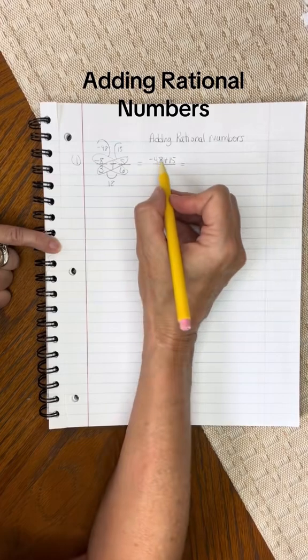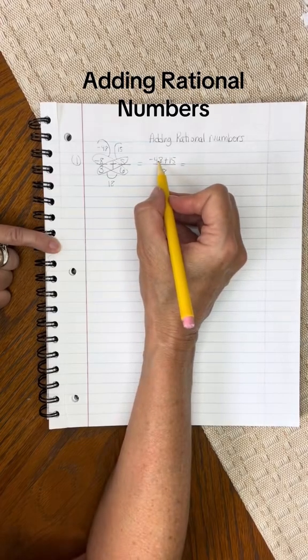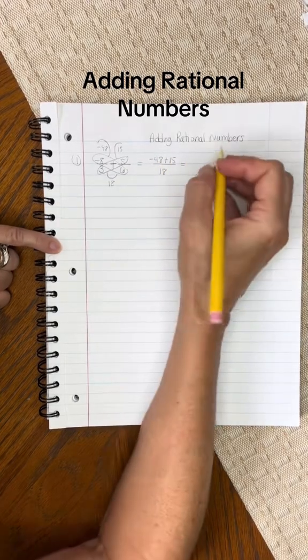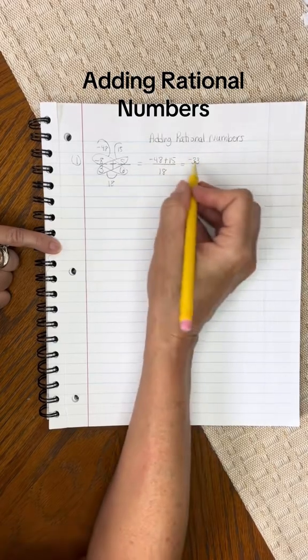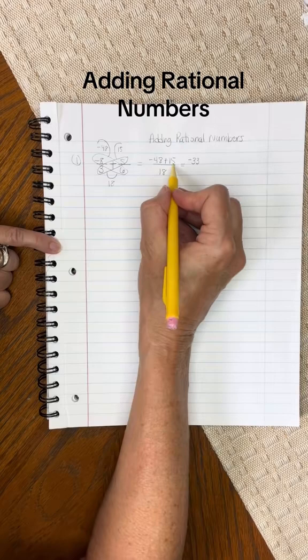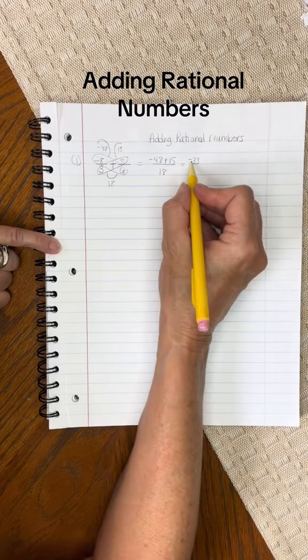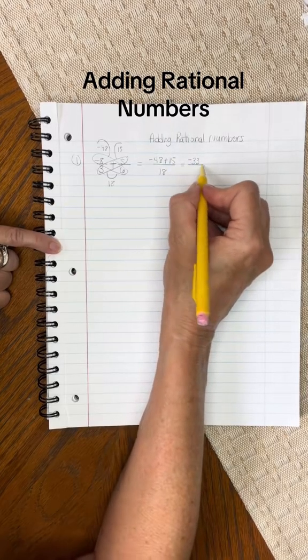On the top in the numerator, the integers are different signs, so I will subtract those and get a negative 33. It's negative because 48's absolute value is bigger than 15, and you keep the sign of the number with the largest absolute value.